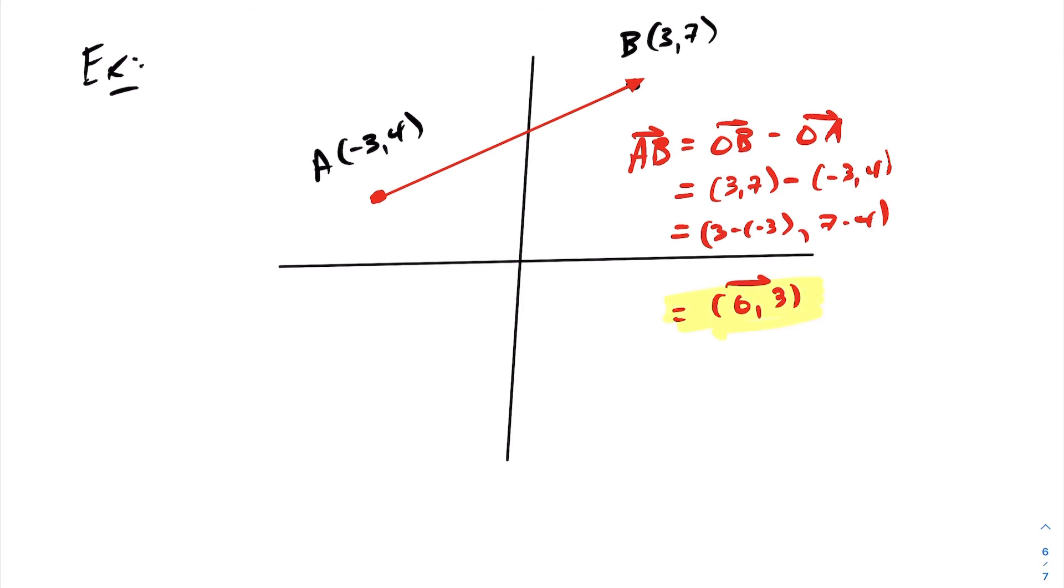Notice in general, when constructing a vector of this nature, it's a matter of just taking 3 minus negative 3, and 7 minus 4.